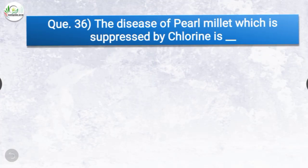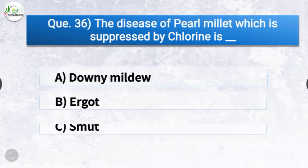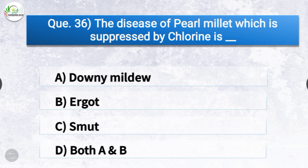Question number thirty-six: The disease of pearl millet which is suppressed by chlorine is dash. The options are downy mildew, ergot, smut, or both A and B. The correct answer is option A, downy mildew. The disease of pearl millet which is suppressed by chlorine is downy mildew.